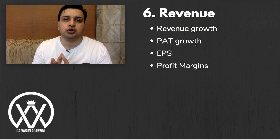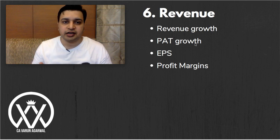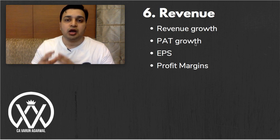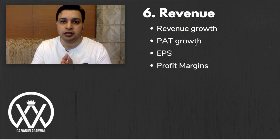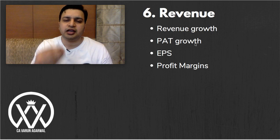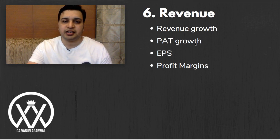Coming to the financials, the first thing to look at is revenue and profits — how much revenue and profit the company generates, the average rate at which revenue and profits have grown over the last 5 to 10 years, how EPS is growing, and what the margins are. A net profit margin of 5 to 10 percent and a gross profit margin of 20 to 25 percent are considered sufficient. Operating at only 1 to 2 percent net margin is risky and can easily slide into losses with minor cost fluctuations.